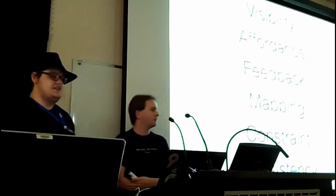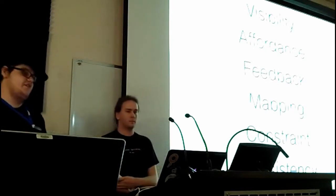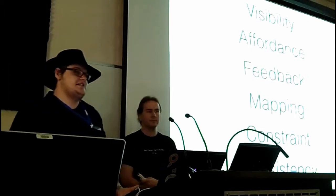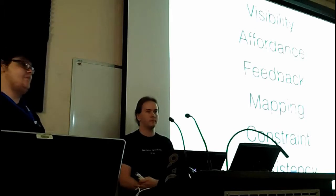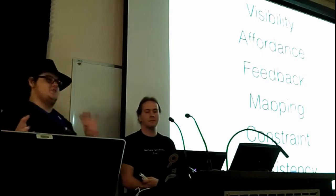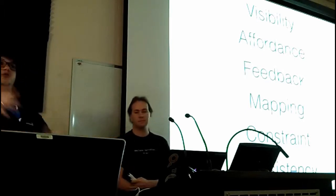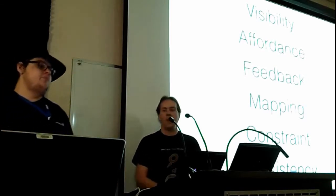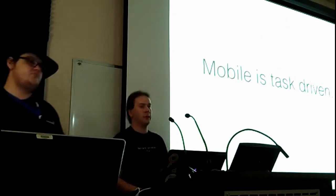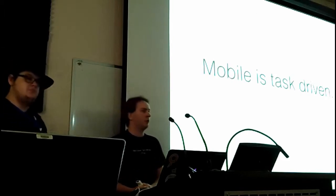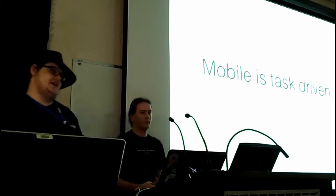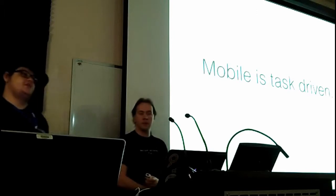Don Norman came up with a bunch of interesting things in terms of how you should approach designing interfaces. The design vocabulary he presents is as follows. He says you need to think about visibility — how obvious it is that something does something. Affordance — basically exposing the fact that something does something. Feedback — being really good at telling the user something is happening or has happened. Mapping — what the user thinks something does. Constraint — the bounds in which they can make something happen. And consistency — if something does something once, it should do the same thing when you repeat it.